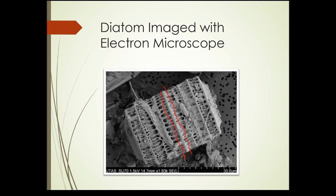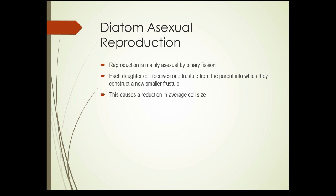Now diatoms can reproduce asexually or sexually. Keep in mind this is a silicon-based cell wall — once it's made it can't grow; it's stuck at this size. One half fits over the other half a little bit. When diatoms reproduce asexually, they reproduce by binary fission, where a cell splits into two. Each daughter cell receives one half of the frustule from the parent and then constructs a new, smaller frustule that fits into the half it received. As you can imagine, since the frustules can't grow, the average size of the diatoms is reduced each time they go through binary fission.